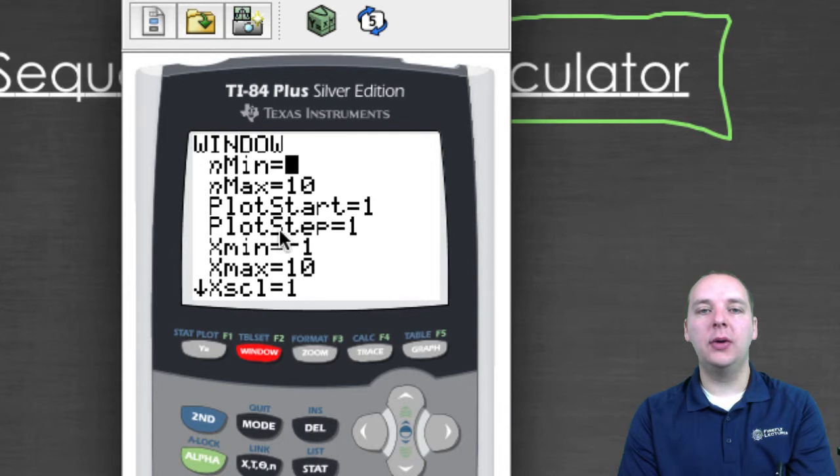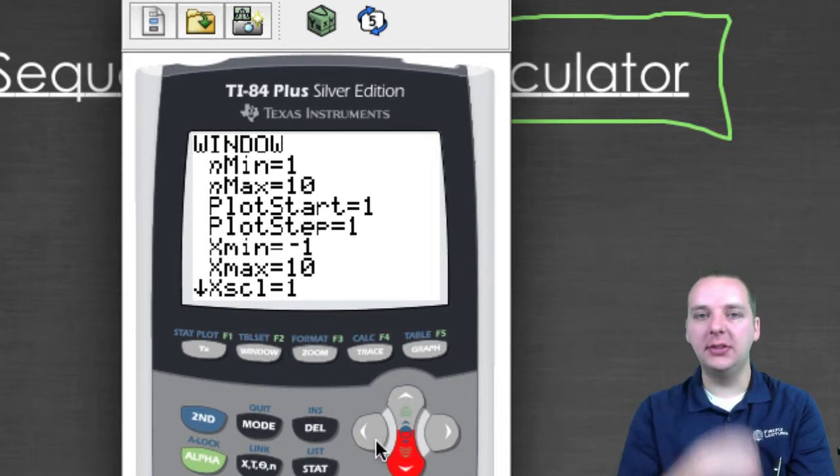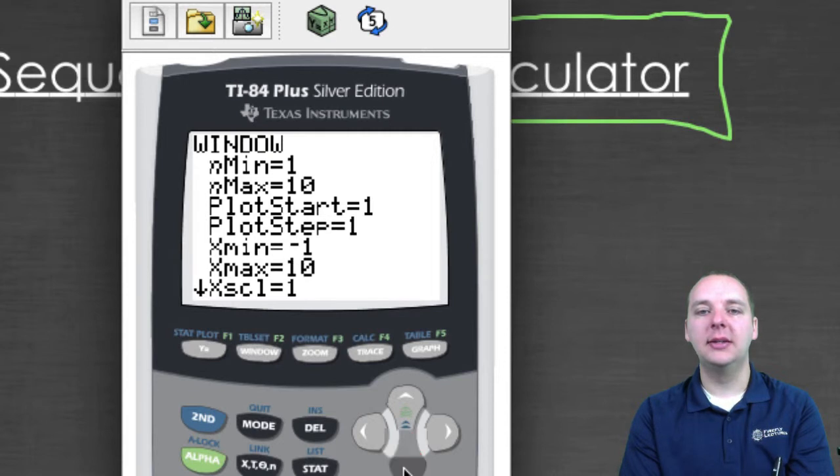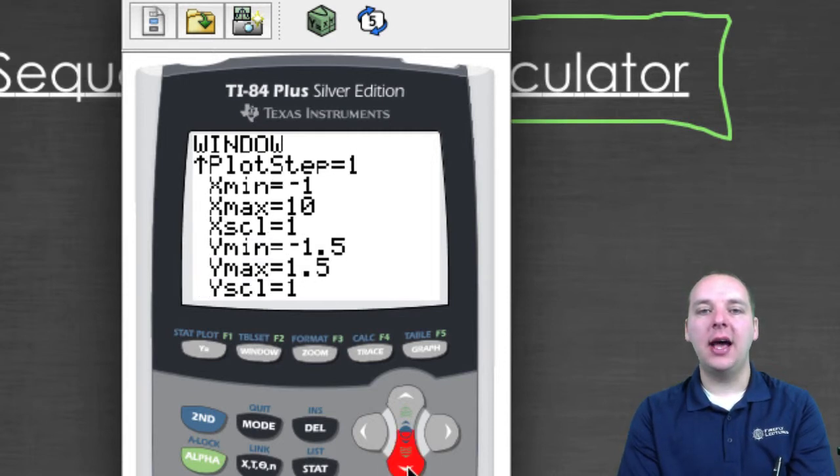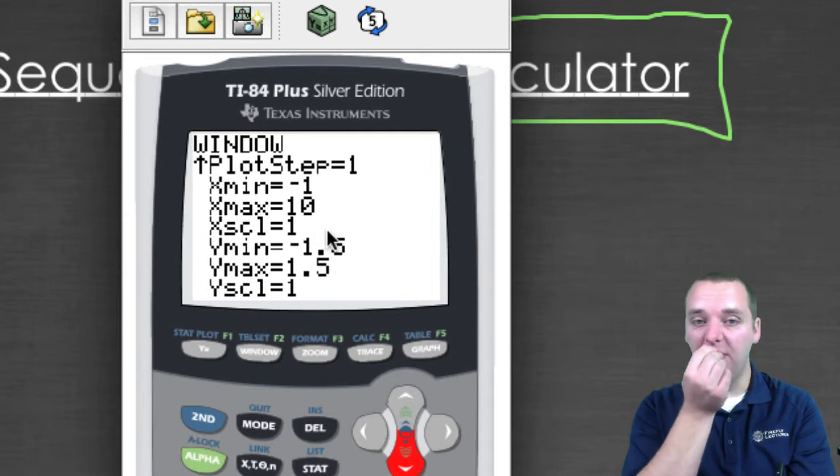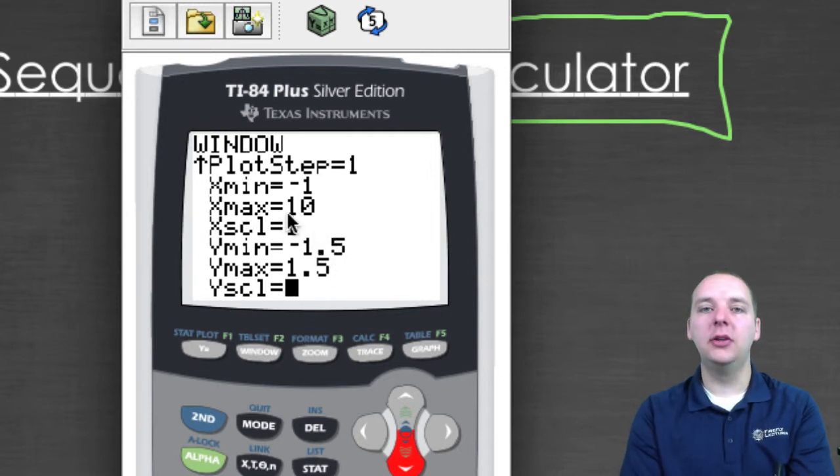And also go back to the window as well. Your window is going to look a little different. Normally it says x min, x max, y min, y max. But now we have a minimum n value, where do you want your sequence to start, n max, how many terms in the sequence do you want. If you scroll down, you still have an x min, an x max, and a y min, and a y max. And I went ahead and adjusted these before the video started, just to make the scale work out nicely.